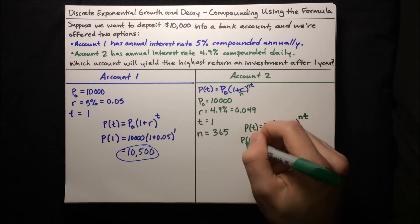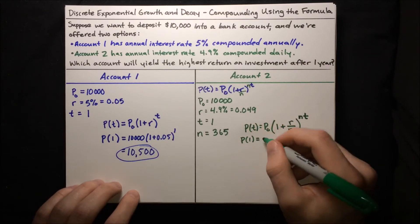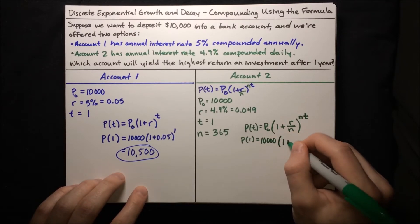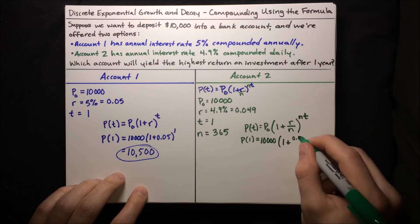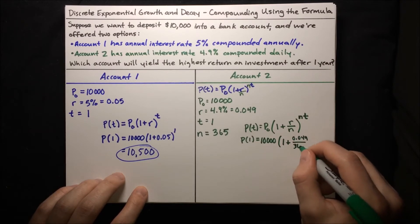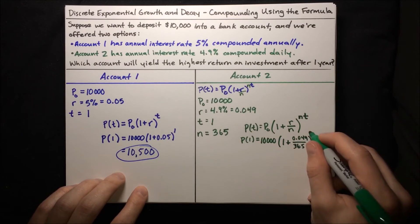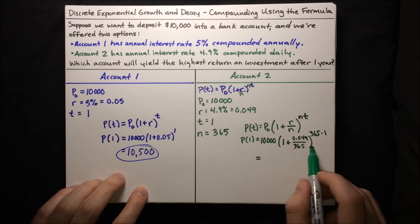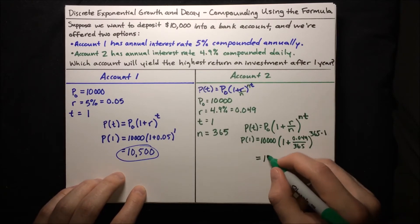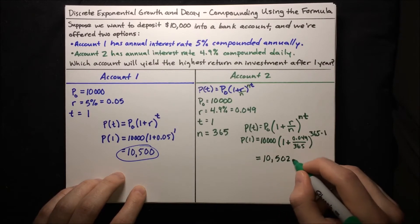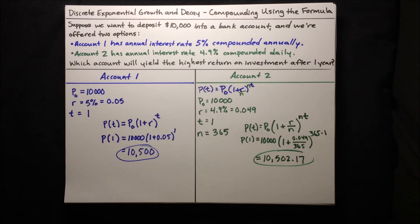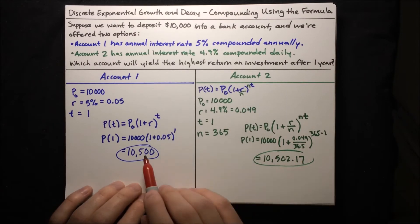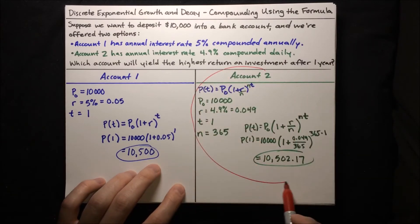So let's compute. P of 1 is equal to P0, which is 10,000, times (1 plus 0.049/365) to the power of 365 times 1. If you punch that into your calculator and compute it, you'll get a result of $10,502.17. So we can see that account 2 yields a higher return on investment — there's an extra $2.17 in account 2. So that is our answer.